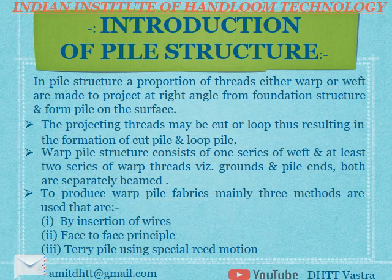If the pile is formed by the warp, it is called warp pile structures; if formed by the weft threads, it is called weft pile structures. The projecting threads may be cut or loop, resulting in cut pile or loop pile. A warp pile structure consists of one series of weft and at least two series of warp threads — ground ends and pile ends — both separately beamed. Three main methods are used: insertion of wires, face-to-face principle, and terry pile using special reed motion.